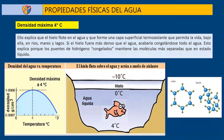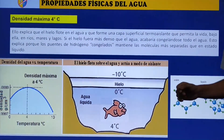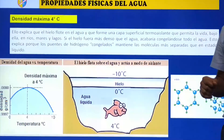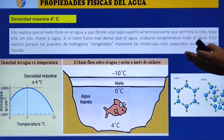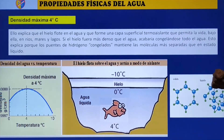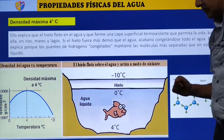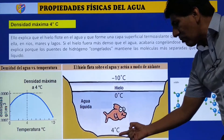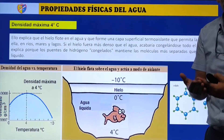Densidad máxima a 4 grados centígrados. El agua alcanza su máxima densidad a los 4 °C. Imaginemos un río con vida que tiene 4 grados centígrados —el agua está en su máxima densidad.